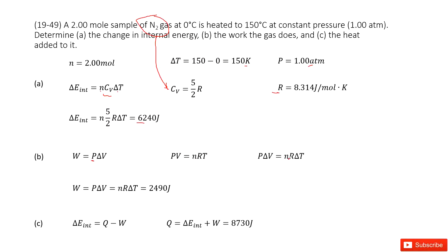n is constant (the mole number), R is constant, P is constant. So PΔV = nRΔT.